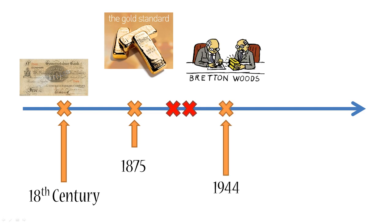To fix that issue, in 1944 the allies got together to sign the Bretton Woods agreement. Simply put, the Bretton Woods agreement was essentially the gold standard version 2.0. All it did was replace gold with the US dollar — the US dollar became the only currency in the world that had to be backed by gold at a fixed exchange rate of $35 per ounce, and all other currencies had a fixed exchange rate to the US dollar.